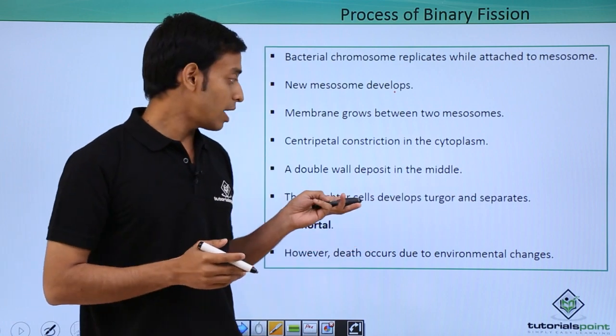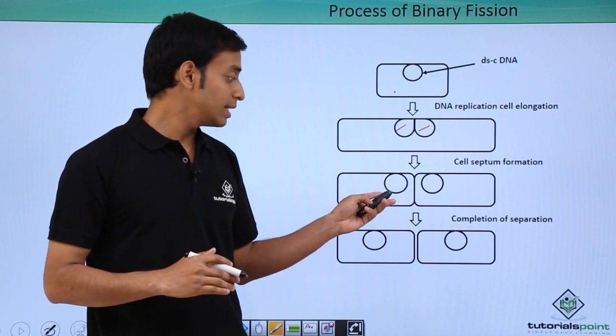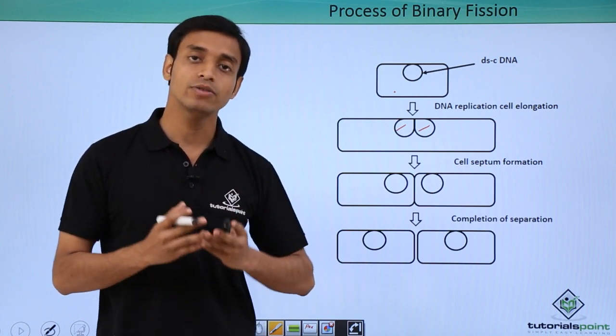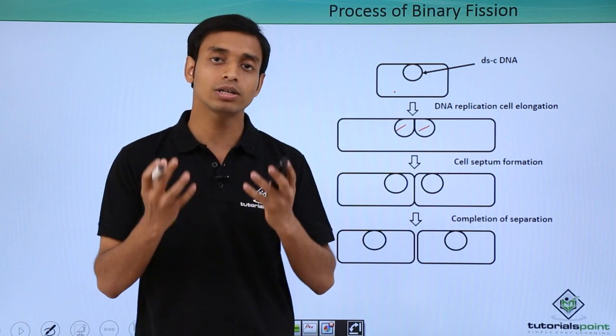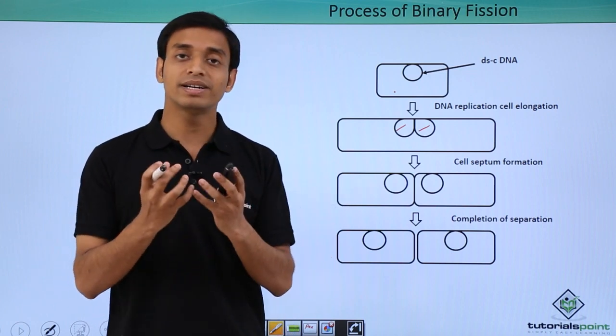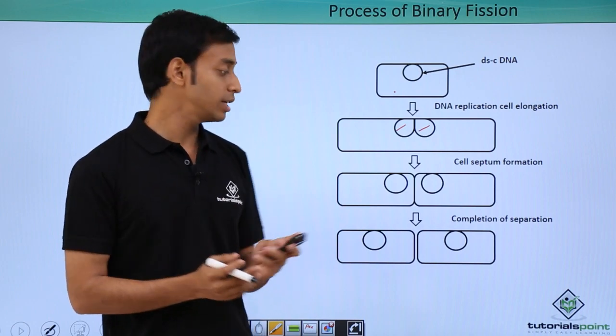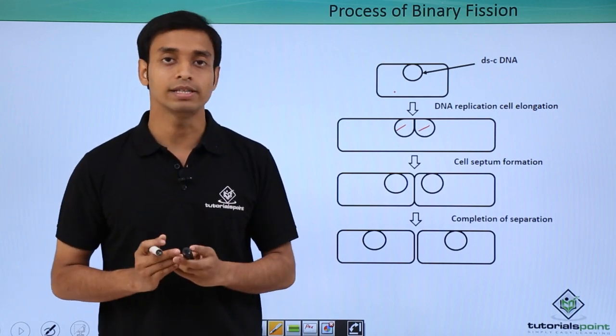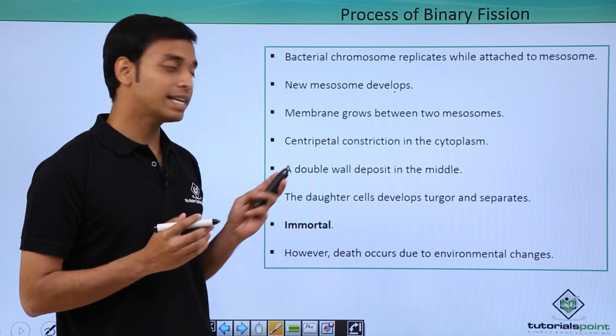The daughter cells develop turgor and separate. What do we mean by this? After division, before it divides, the cell's volume will increase, the cytoplasmic content will also increase. Because of this increase in volume, mass, and all the components inside the cytoplasm, it will develop tremendous turgor pressure inside it. Because of this turgor pressure, these two cells will divide and form into two new daughter cells.